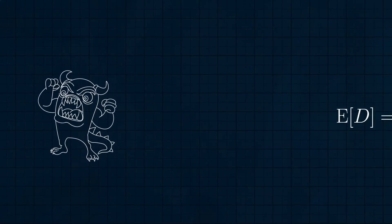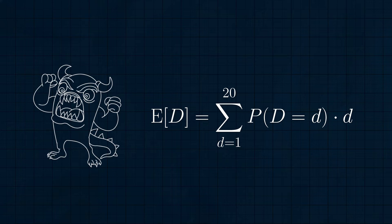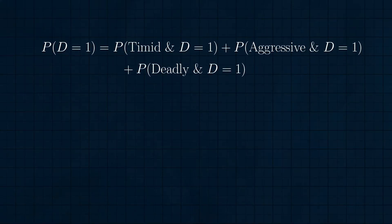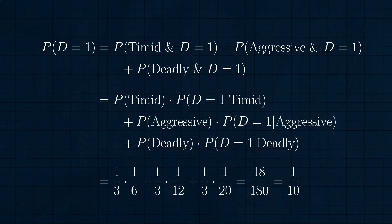Let's start by using the definition of expected value directly. We know the expected value of the damage is equal to the sum from d equals 1 to 20 of d times the probability that the damage equals d. So we need to compute the probability of each amount of damage. For d equals 1 to 6, any of the three types of monsters can deal that amount of damage, so they all have the same probability. Taking d equals 1 as the example, the probability the damage is 1 can be broken up by monster type — timid, aggressive, and deadly — and summed since the monster types are disjoint. Using conditional probability, we compute each monster type's contribution to get 1/10. So for each amount of damage 1 to 6, there is a 1/10 probability it occurs.